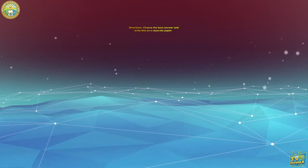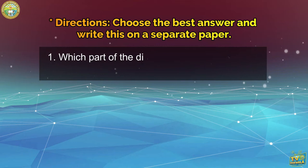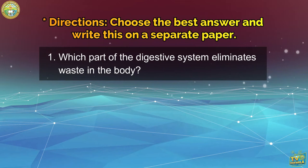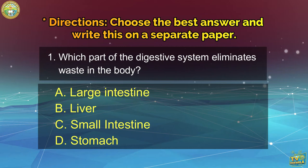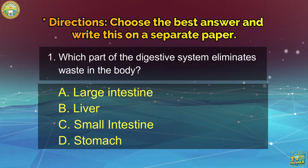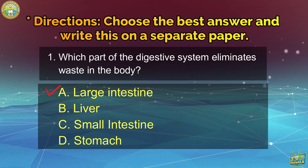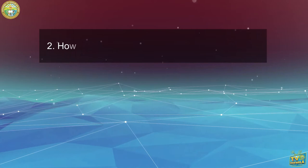Directions: Choose the best answer and write it on a separate paper. Number 1: Which part of the digestive system eliminates waste in the body? A. Large intestine, B. Liver, C. Small intestine, D. Stomach. If you answered letter A, Large intestine — you are right!